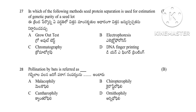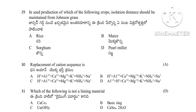Question 28: Pollination by bats is referred to as — melecophilae, chiropterophilae, canthorophilae, or ornithophilae. The answer is chiropterophilae. Question 29: In seed production of which crop should isolation distance be maintained from Johnson grass — rice, maize, or sorghum. Johnson grass is related to sorghum, so isolation distance must be maintained for sorghum crop.